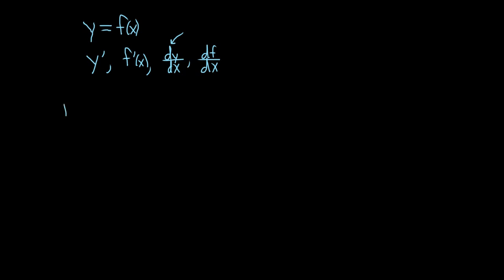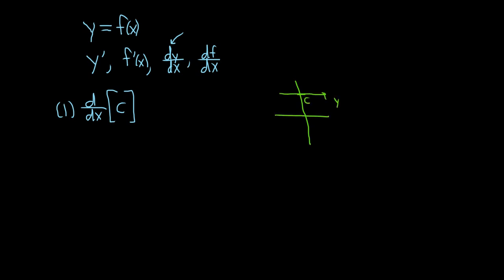The first rule: if we take the derivative with respect to x — d/dx means take the derivative with respect to x — of a constant function, what do we get? The derivative is the slope of the tangent line. If you graph a constant function, say c, it's a horizontal line. If you pick any point on this line and draw a tangent line, you get the same line, and horizontal lines have a slope of zero. Therefore this derivative is zero.